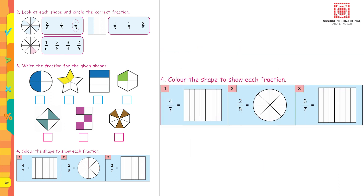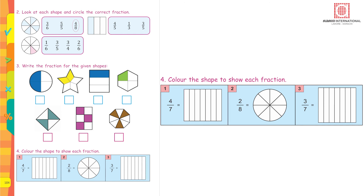Question number four: color the shape to show each fraction. The first one is divided into seven parts and four of them should be colored, so this represents four upon seven. You are capable of doing questions two, three, four, and five yourself. Good luck!